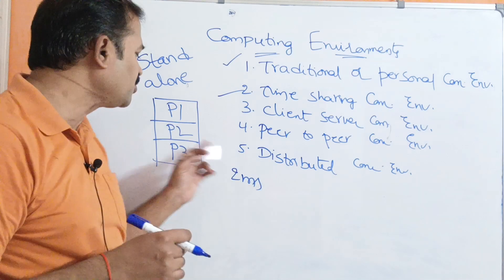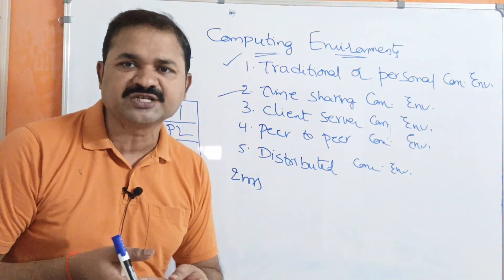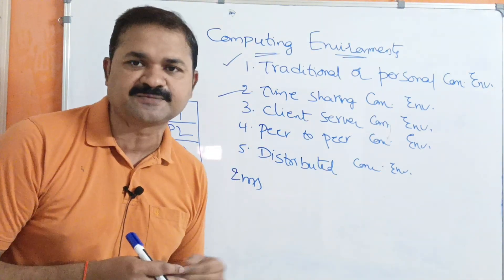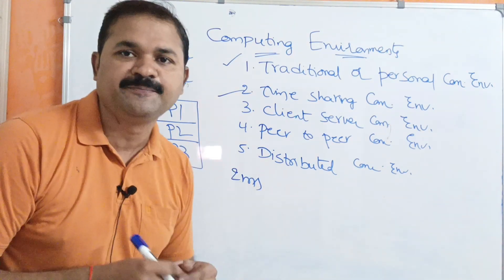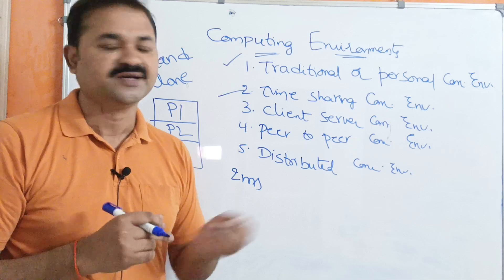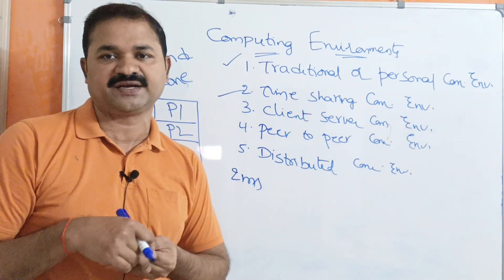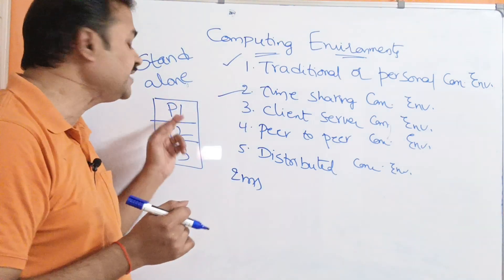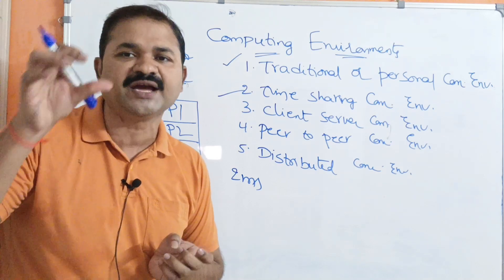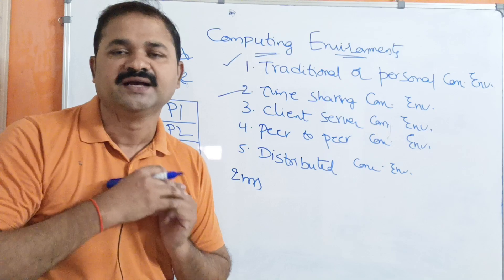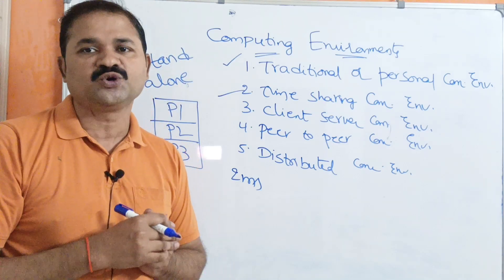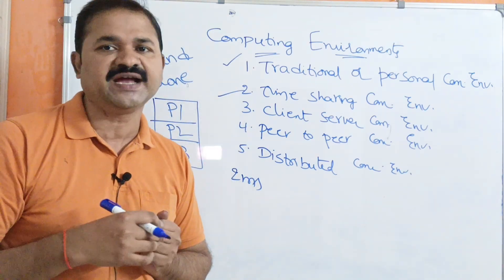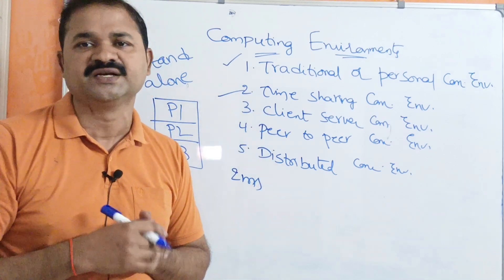CPU executes P1 for two milliseconds, then control shifts to P2 for two milliseconds, then to P3 for two milliseconds. This is called time sharing computing environment — it is a multiprogramming system where multiple processes are in main memory and the CPU executes all three processes concurrently. CPU time is shared among all processes so that all three programs execute in a faster manner.